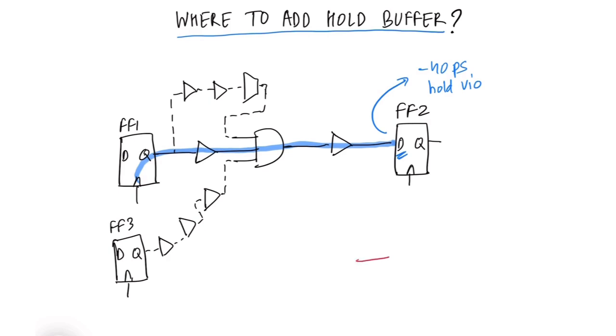We have to fix this hold violation by inserting a hold buffer somewhere on this timing path, and we have to come up with the best location to add this hold buffer on this path. So to fix the hold violation of minus 40 picoseconds, we are using a hold buffer which will add a delay of 50 picoseconds in the min corner or the hold corner.